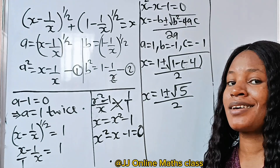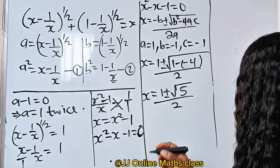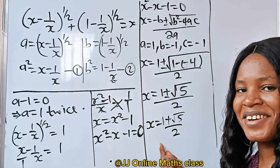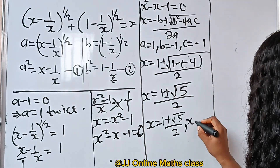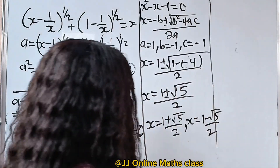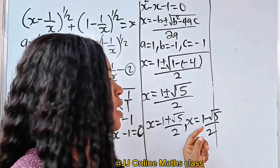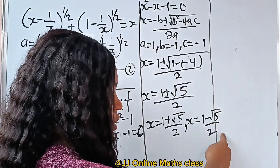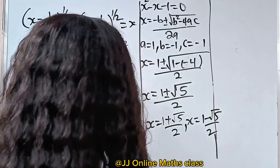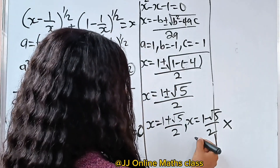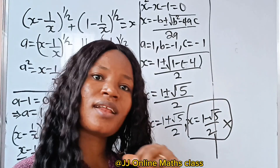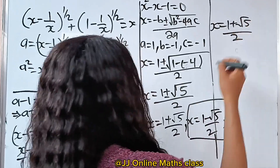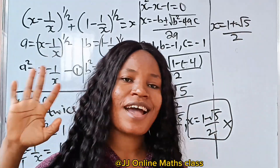We have two values for x. The first is x equals 1 plus square root of 5 over 2, which is called the golden ratio. The second is x equals 1 minus square root of 5 over 2, which is the negative of the reciprocal of the golden ratio. However, since we have two square roots in our original equation, x cannot be negative, so the second solution is rejected. The final answer is x equals 1 plus square root of 5 divided by 2, the golden ratio. Thank you for watching.